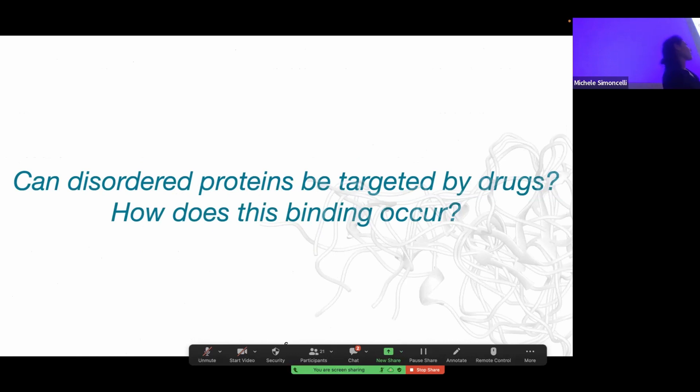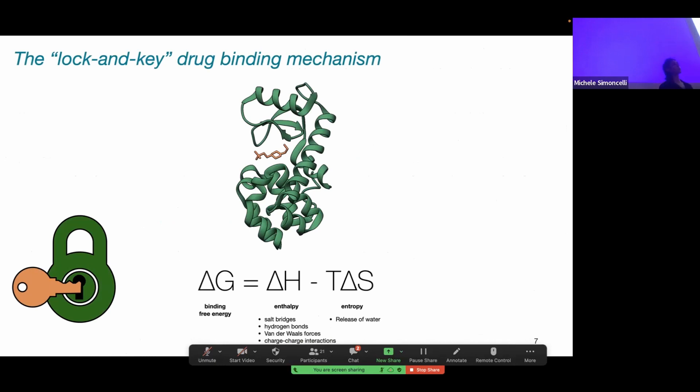What I mean by how does this binding occur is what are the underlying biophysical principles that govern a small molecule to come together with a disordered protein and interact with it? I'd like to take a step back and talk about how we generally think about small molecule interactions with proteins. In our biochemistry 101 courses, we're taught about the lock and key drug binding mechanism, whereby a small molecule will come into an active site or a binding site, much like a key fits into a lock. While this is a bit of an oversimplification, we can be very quantitative about these interactions in terms of an overall favorable binding free energy, which can be broken down into two components: favorable enthalpy or stickiness between the drug and the protein, and entropy. Enthalpy has to do with favorable salt bridges, hydrogen bonds, van der Waals forces, charge-charge interactions.